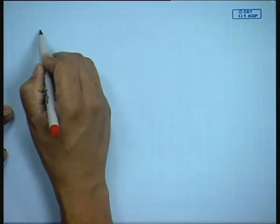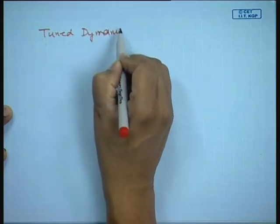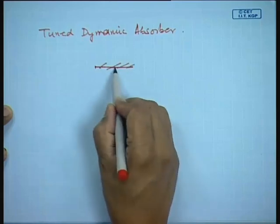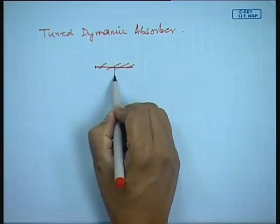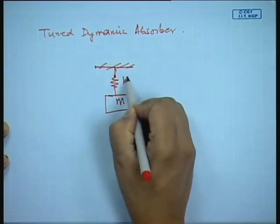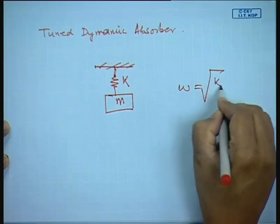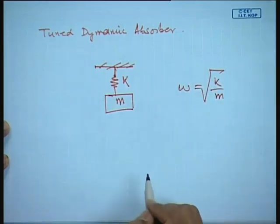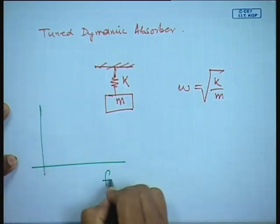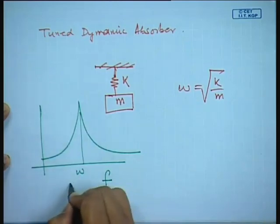Another application of vibration is the tuned dynamic absorber. Suppose I have a body with mass m and stiffness k, so its natural frequency ω equals √(k/m). This is the primary mass. If I observe the response of this system, I get a resonant response at its natural frequency ω = √(k/m), and the amplitude x at that frequency may be unacceptably large — I would like to reduce this vibration amplitude.